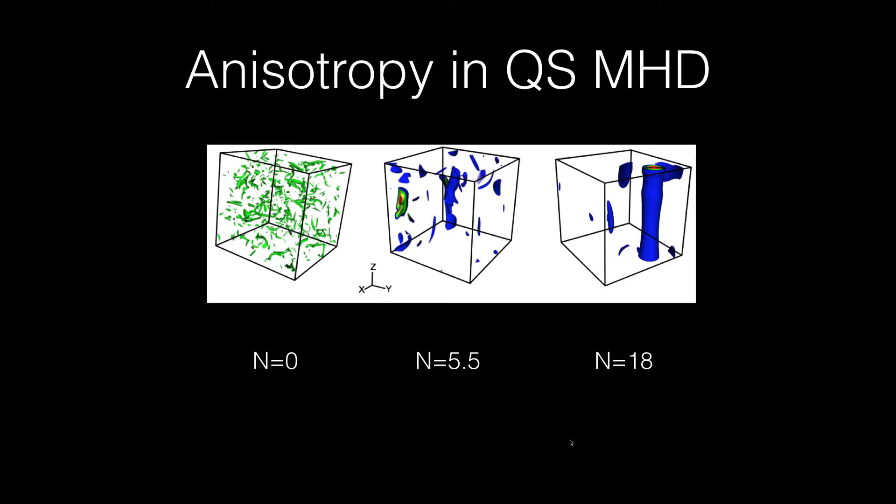Now, let us look at the anisotropy arising due to the external magnetic field. For B not equal to zero or N equal to zero, the flow is naturally isotropic, like here. The vortices are spread out everywhere.